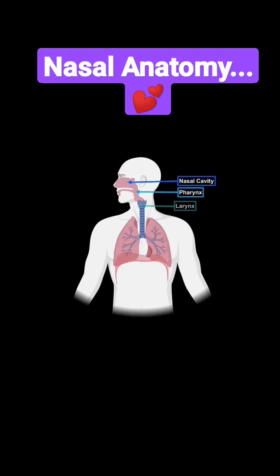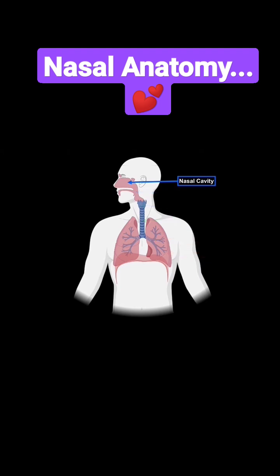Nose, pharynx, larynx, trachea, bronchi and the lungs. Our focus is to cover the anatomy of all of the structures you see here, step by step, and we will start by covering the detailed anatomy of the nose and the nasal cavity.